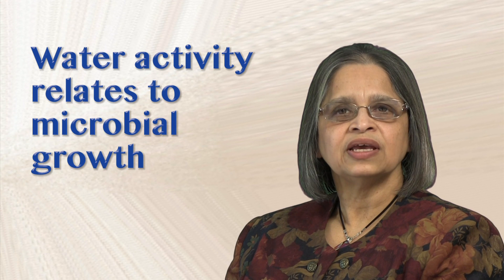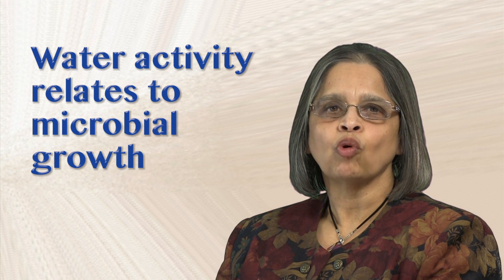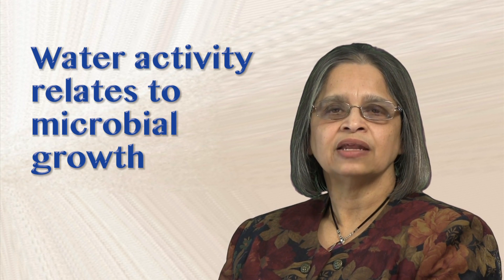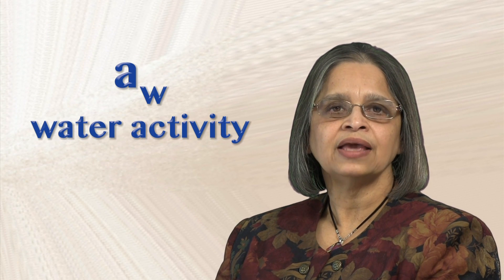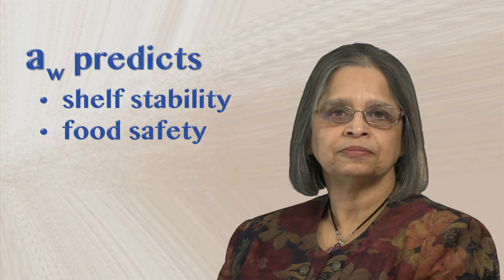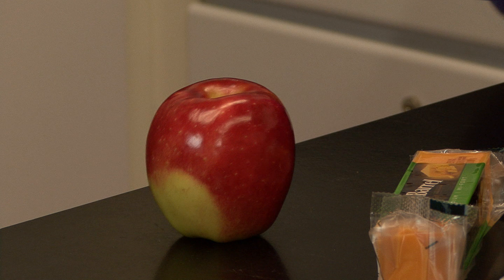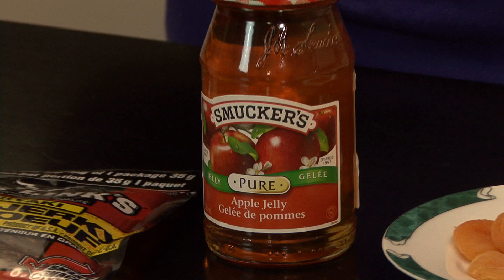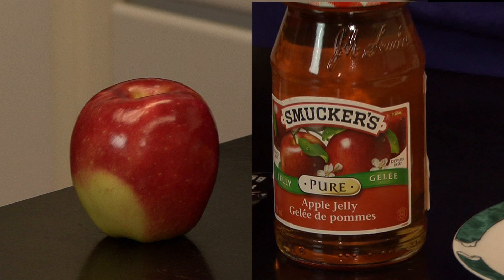Water activity is something different, but it is an equally important measure and is indicated by this nomenclature, A sub W. It is a very important factor in determining a product's shelf stability and safety. For example, there is much more free water in a fresh fruit than in a jam or jelly, even though they both have a fairly high water content. Because the water in the jam and jelly is bound up structurally and chemically, and is not freely available.